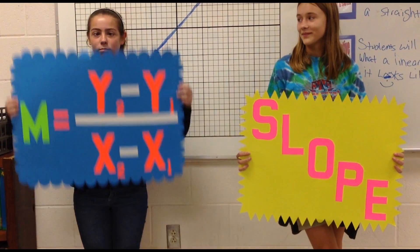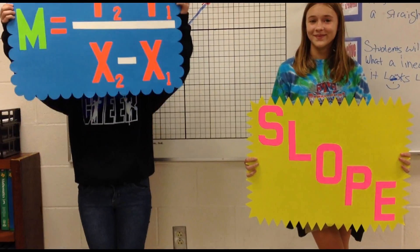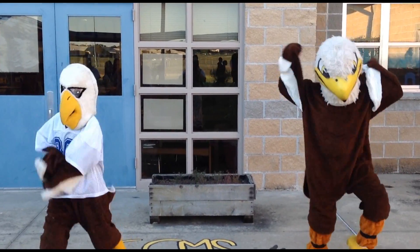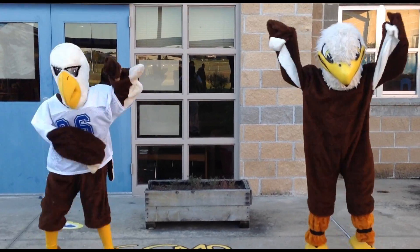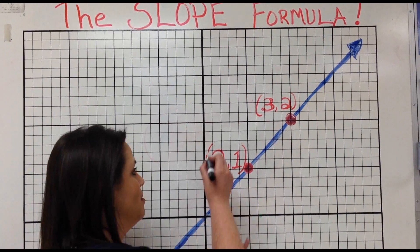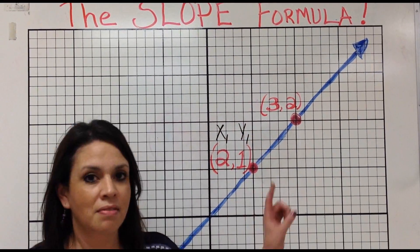The slope formula is super easy. When it's done, it can be fun. X2 minus x1 is the run.